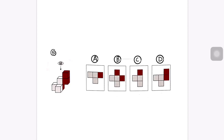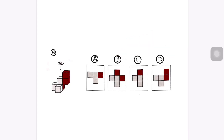For question five, we're looking from the top again, just like question three. From the top, we can see two layers — layer one and layer two. We eliminate any choice with more than two layers. B, C, and D all have three layers, so we eliminate all of them. That leaves us with A, and A is correct because it has only two layers.